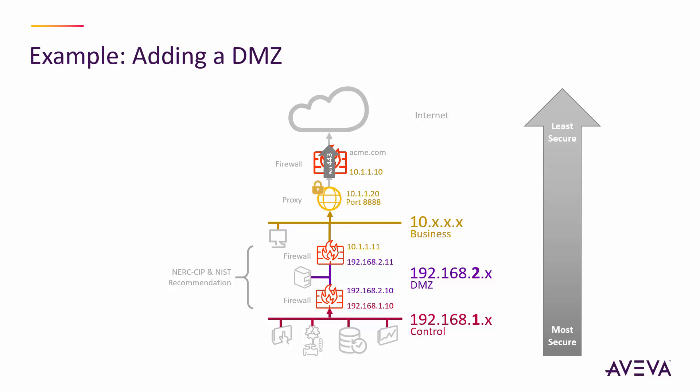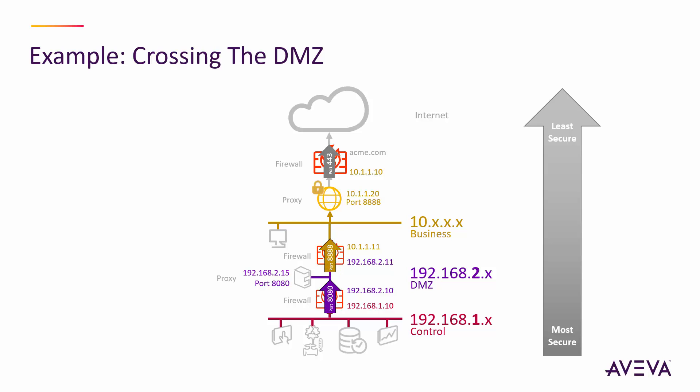NIST and NERC further suggest that these two firewalls are from different vendors, to reduce the risk of configuration errors being duplicated across both systems. As you see here, these firewalls have an IP address within the DMZ and one on the other network they're part of, with a system in the DMZ network. To bridge the networks, you can set up a web proxy in the DMZ and use it to route requests from the control network to the internet via the corporate proxy. A system on the control network would need port 8080 access to the DMZ machine, and the DMZ machine would need port 8088 access to the corporate proxy. Any web proxy will work, including open source ones.